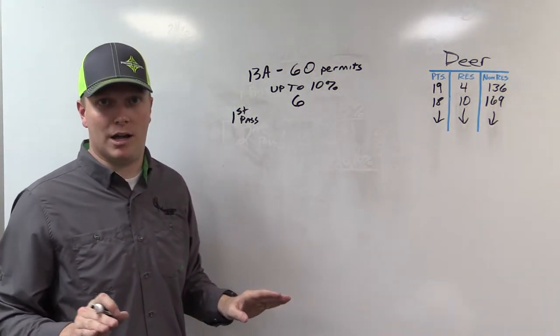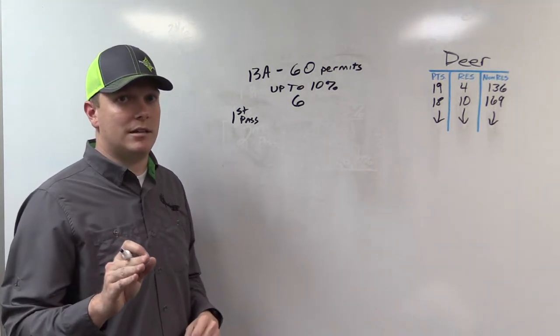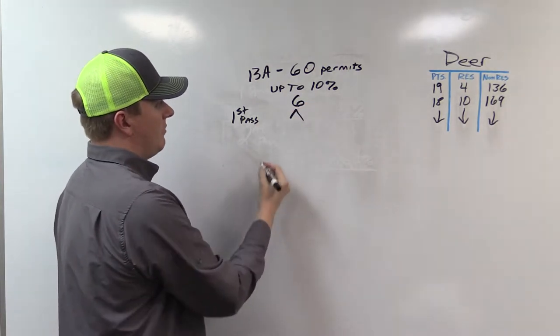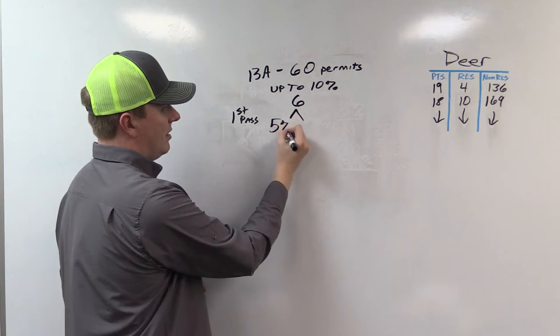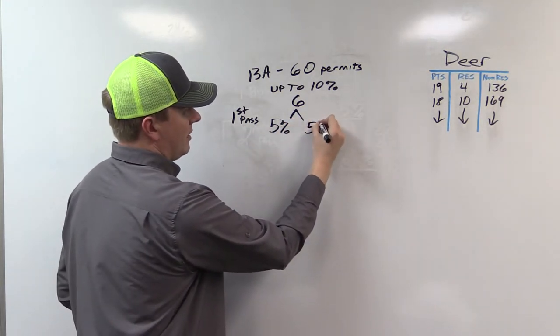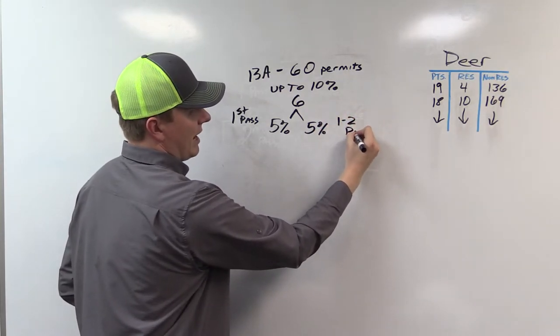Arizona, what they decided to do is split that. So now, it's 5 and 5. So you get 5% in this first pass, and then you get 5% in the 1-2 pass, or the second pass.